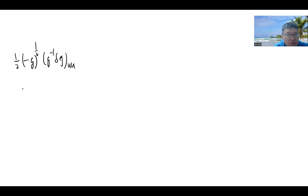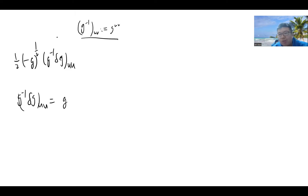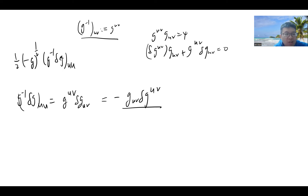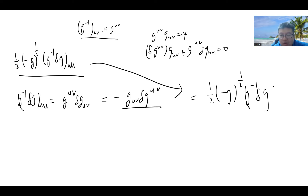Since g^{UV} is defined as the inverse metric with upper indices, and using the identity that δ(g_{UV} g^{UV}) = 0, which gives g_{UV} δg^{UV} + g^{UV} δg_{UV} = 0, we can replace −g^{UV} δg_{UV} by +g_{UV} δg^{UV}. So term one finally becomes: −½ √(−det g) · g_{UV} δg^{UV}.